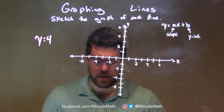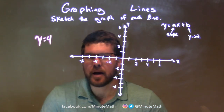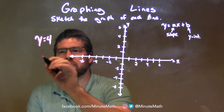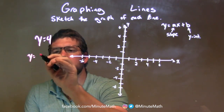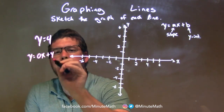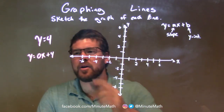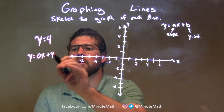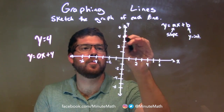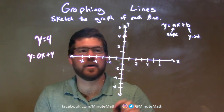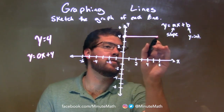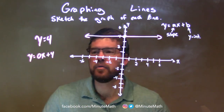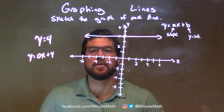y equals 4. Now this one is kind of tricky in a sense. If y equals 4, that's going to be a horizontal line. The way I like to show students is that y equals 4 is the same thing as y equals 0x plus 4. You won't ever write it like that, but 4 is where we cross the y-axis and our slope is 0. So we have a horizontal line right at 4. And there we have our graph.